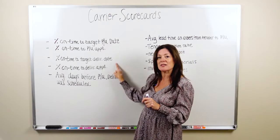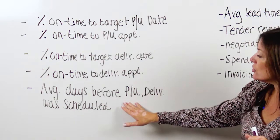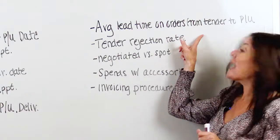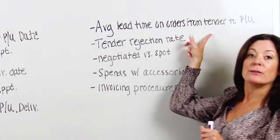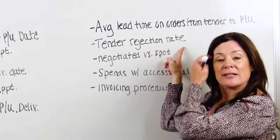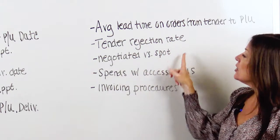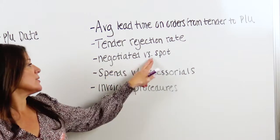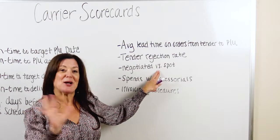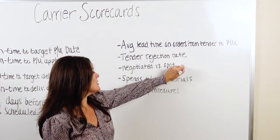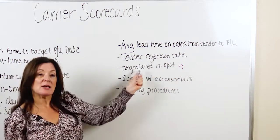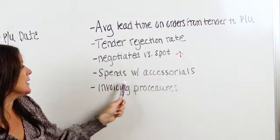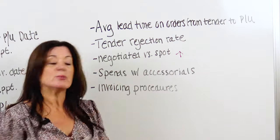Now these are different, and we'll go over that. You also want to see the average days before pickup and delivery were scheduled, and your average lead times on orders from tender to pickup. You want to measure your carriers' tender rejection rate. And especially in truckload, it's really important to measure the number of negotiated moves versus spot. During the pandemic we're seeing truckload contracted rates that aren't being held and are moving to spot — and we measure that as part of our carrier scorecarding.